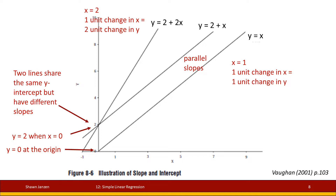Let's look at different regression lines plotted out. The one on the far left has y equals 2 plus 2x. The one in the middle is y equals 2 plus x. The one on the right is y equals x. The left and middle lines share the same y-intercept — both cross the y-axis at positive 2 — but they have different slopes. The left has a slope of 2 and the middle a slope of 1, so the left is twice as steep as the middle.